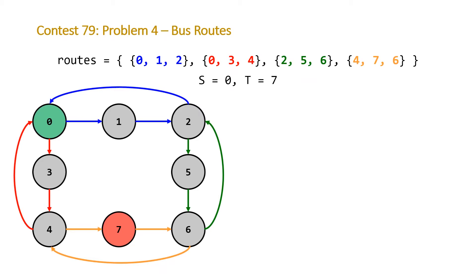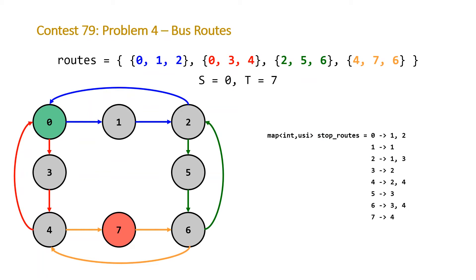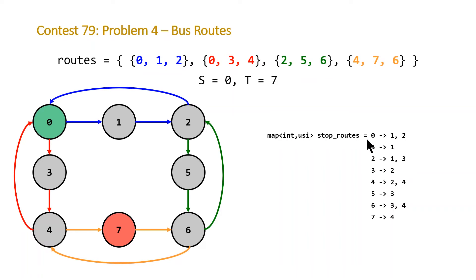The first thing we're going to do is create an adjacency list. This will be an unordered map where the key is an integer representing the stop number, and the value is an unordered set of integers — those are the unique routes that this stop is on. For stop 0, this exists in both route 1 and route 2, so from stop 0 we can either go down route 1 or route 2. For stop 1, it only exists on the blue route.